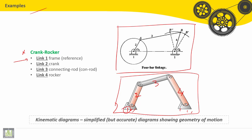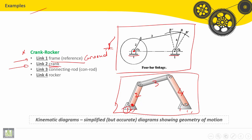Link number one is the frame reference ground. Here we have link number one, joined with link number two with a revolute. We can make it here as a point or a small circle. This is the ground and this is link number two, which is called the crank. Here we have the input and rotation.